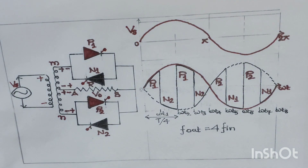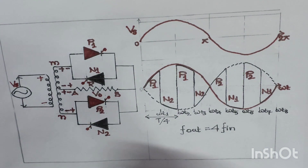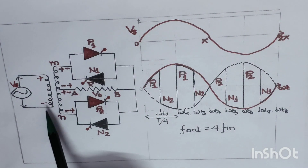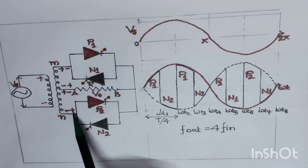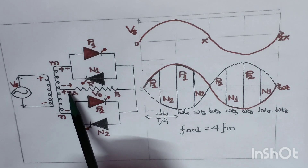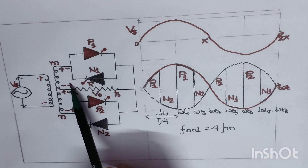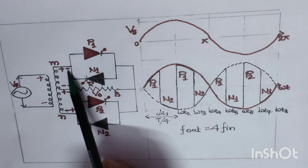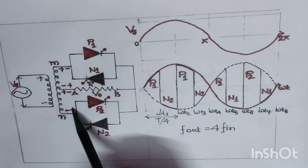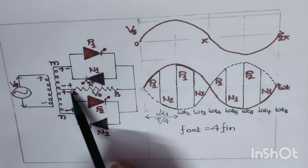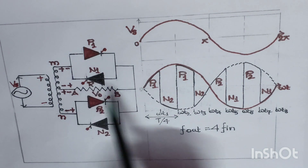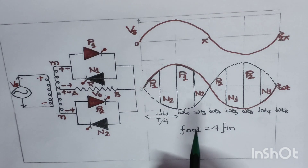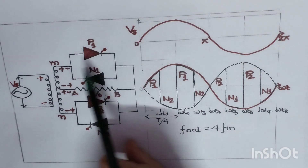During the negative half cycle, the polarity is reversed: the bottom side becomes positive and the top side becomes negative. The midpoint connection is negative, while specific secondary terminals have positive polarity relative to the midpoint. This is how polarity is defined for the operation of this cycloconverter.